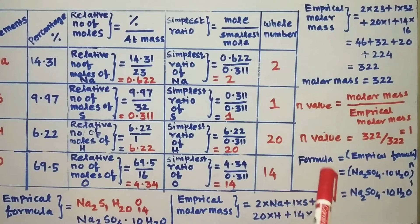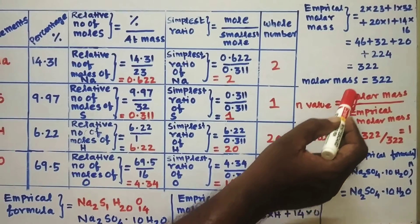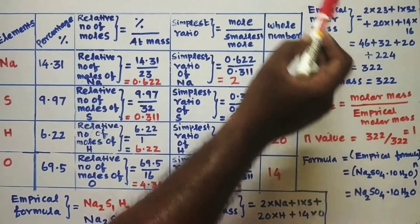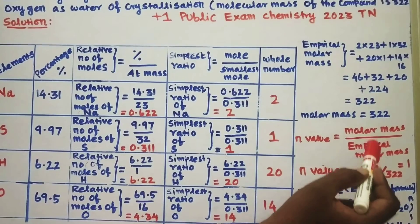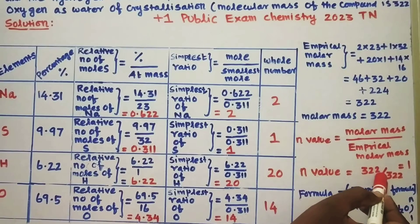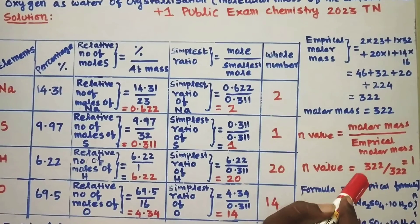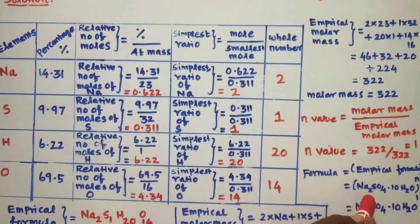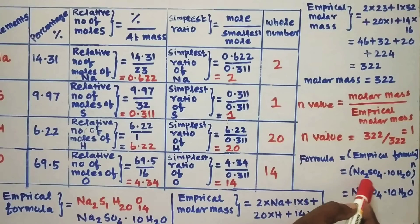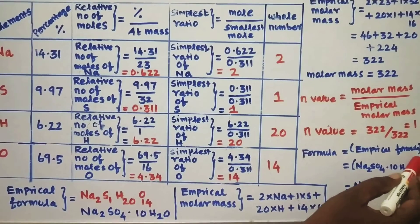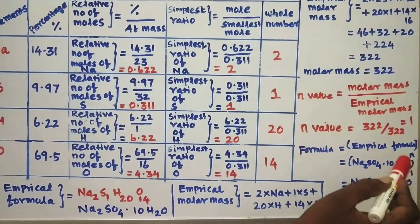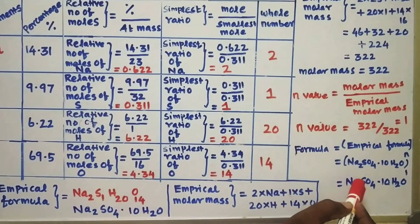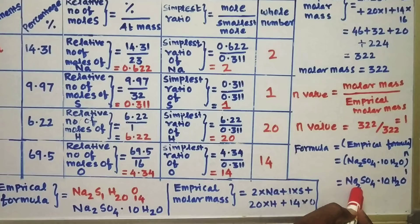Now we find the N value. N = molar mass ÷ empirical molar mass = 322 ÷ 322 = 1. The molecular formula = empirical formula × N. Therefore the molecular formula = Na₂SO₄·10H₂O × 1 = Na₂SO₄·10H₂O. This is sodium sulfate decahydrate — the compound given in this problem.